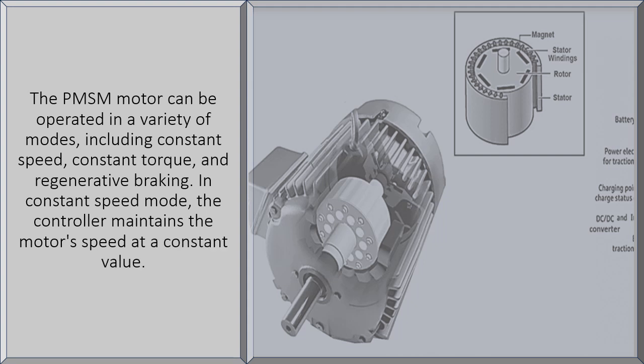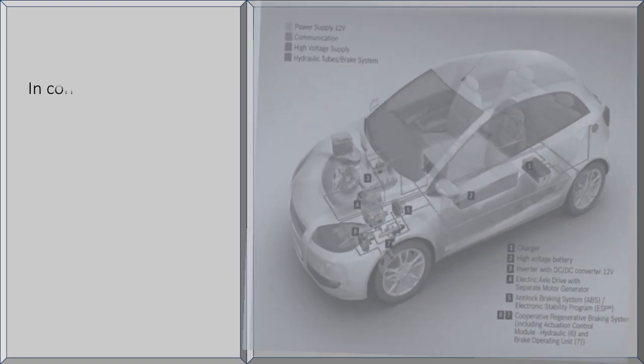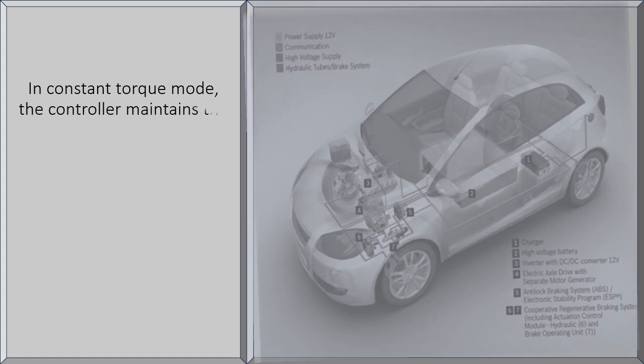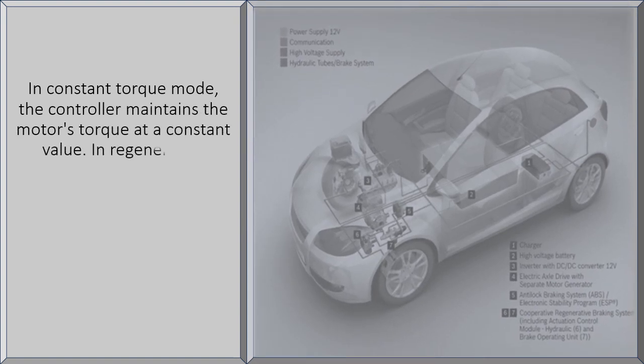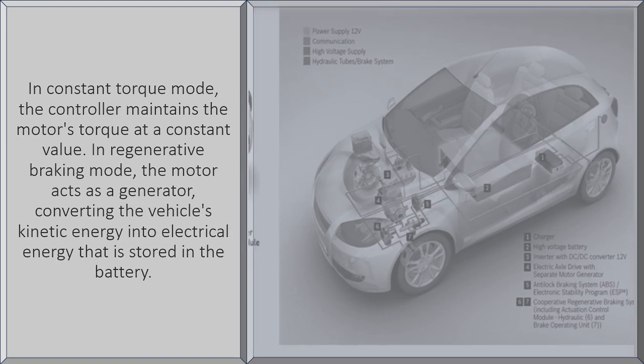In constant speed mode, the controller maintains the motor's speed at a constant value. In regenerative braking mode, the motor acts as a generator, converting the vehicle's kinetic energy into electrical energy that is stored in the battery.